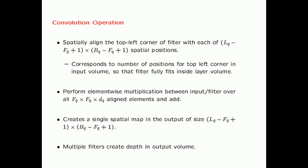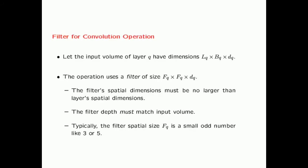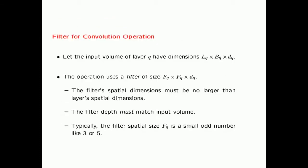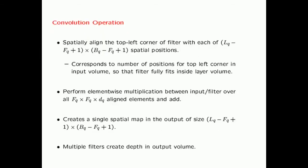How does a convolutional operation occur? The filter is typically much smaller than the input volume, so you can align the filter at various positions along the spatial volume. You spatially align the top-left corner of the filter with each of the LQ minus FQ plus 1 cross BQ minus FQ plus 1 spatial positions — the positions at which the filter fully fits inside the layer volume.